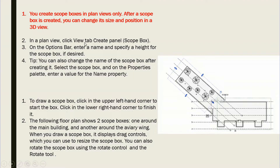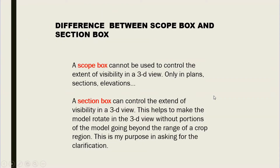In a plan view, click the View tab, then the Create panel, then Scope Box. On the option bar, enter a name and specify a height for the scope box. You can see this is the plan view here, and this is one scope box — suppose this is Wing A and this is Wing B. So there are two scope boxes; you draw in your plan view and then you can view it in a 3D view.